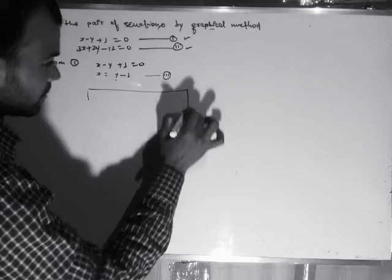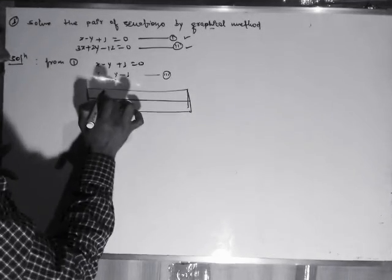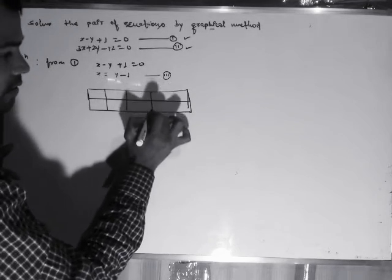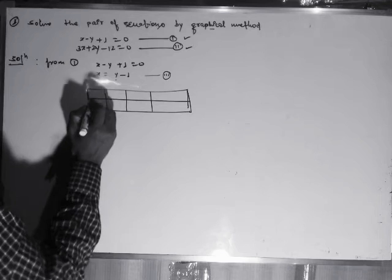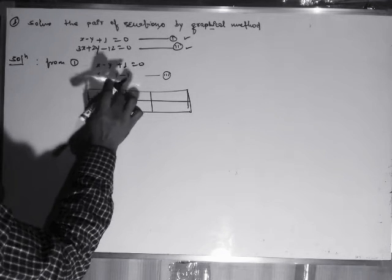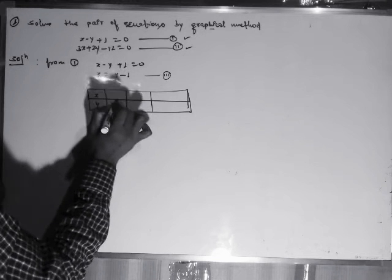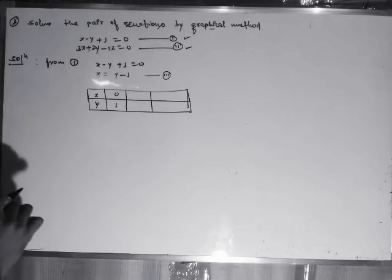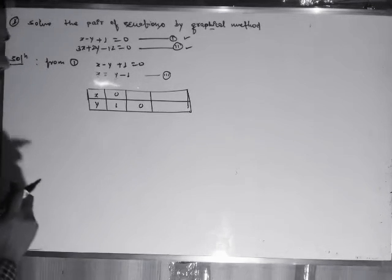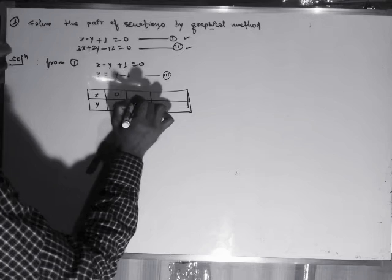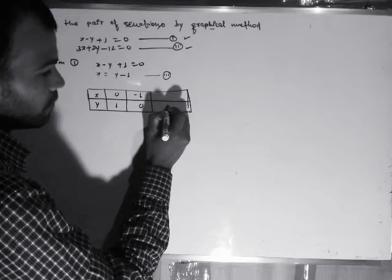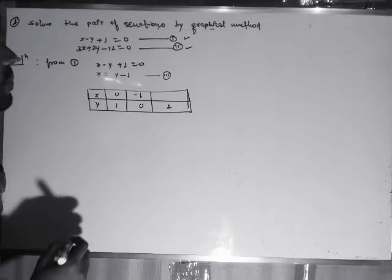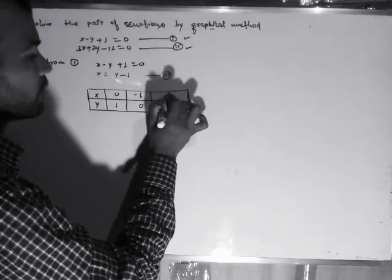Now let us make a table. We have to put at least 3 values of y to get 3 values of x. If you put y equal to 1 in equation number 3, it gives x equal to 0. If you put y equal to 0, and if you put y equal to plus 2, what does it give? x is equal to plus 1.